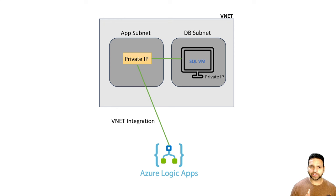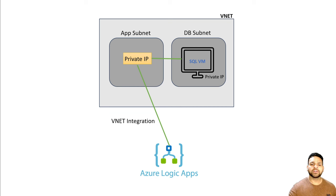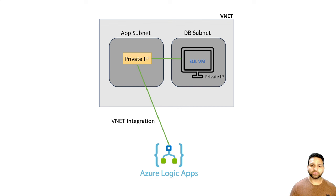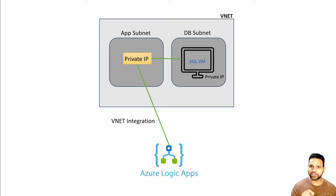So there are two important points to consider. The first point is VNet integration, which is covered now. The second important point is that while creating the workflow in the Logic App to connect to the SQL VM, when you define a connector, there are two different connectors available — version one and version two. In this case, you have to specifically use version one because version two gives a gateway error and it fails. So let's check the end-to-end deployment in the lab.